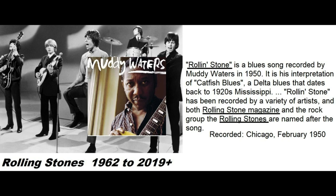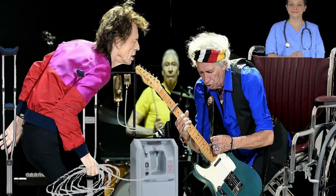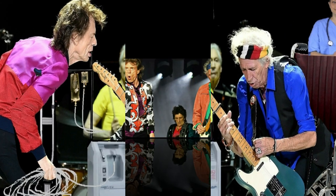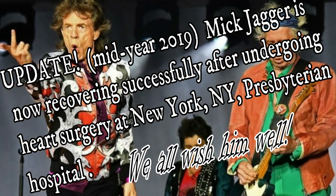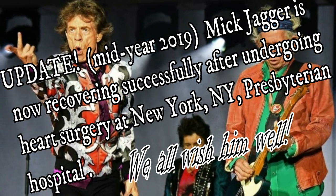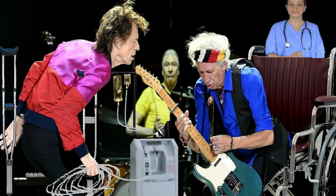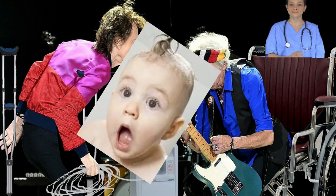Rolling Stone magazine and the Rolling Stones rock band both get their name from that Muddy Waters song. Here we see what the Rolling Stones might look like for this tour: Mick Jagger on crutches holding his oxygen hose, Keith Richards in a wheelchair with a full-time nurse, and drummer Charlie Watts with some intravenous pep juice.